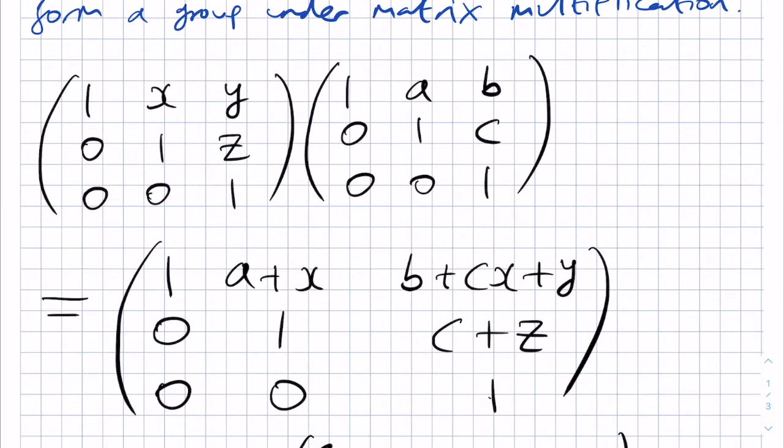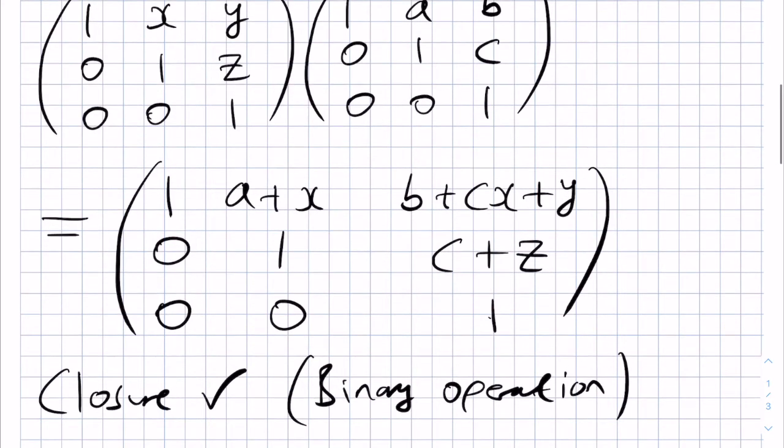We can use the above formula that we worked out for multiplying together two matrices of this form. If we take X, Y, and Z to be fixed, we can choose appropriate values of A, B, and C so that when we multiply them together in this way, we get the identity.